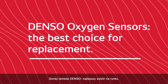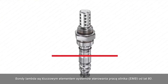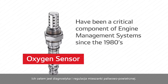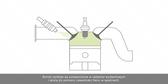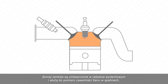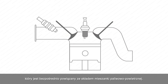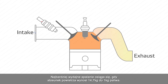DENSO oxygen sensors are the best choice for replacement oxygen sensors. Their purpose is to diagnose and regulate air-fuel mixture, and they have been a critical component of engine management systems since the 1980s. Located in the exhaust system, oxygen sensors are designed to measure the oxygen content, which is directly related to the air-fuel mixture at the engine intake.